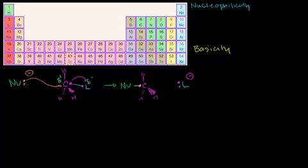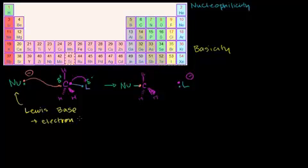So, if you want to use nucleophilic substitution, this nucleophilic substitution is called Lewis basic — the nucleophile is an electron donor. If you want to use electron donors, you can use nucleophilic substitution. This is called kinetically controlled.